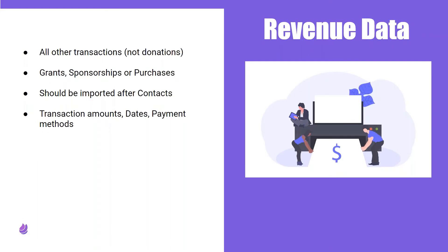Revenue data is a broad umbrella — basically all other transactions that aren't donations. If donation data covers only transactions eligible for donation receipts, revenue data is everything else: any transaction not eligible for a donation receipt. Think of it as miscellaneous payments, including things like grants, sponsorships, or purchases. Again, it should be imported after contacts. Think transaction amounts, dates, and payment methods.